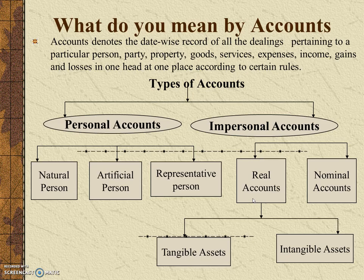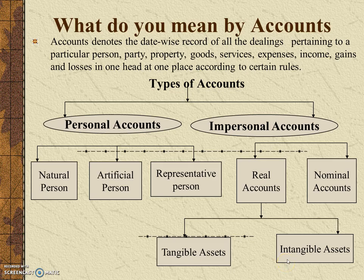The second type of account is the impersonal account, which is subdivided into two parts: real account and nominal account. The real account belongs to the assets of the company. Assets can be of two types — tangible and intangible. Tangible assets include land, building, furniture, and fixtures, while intangible assets include patents, copyrights, and trademarks.